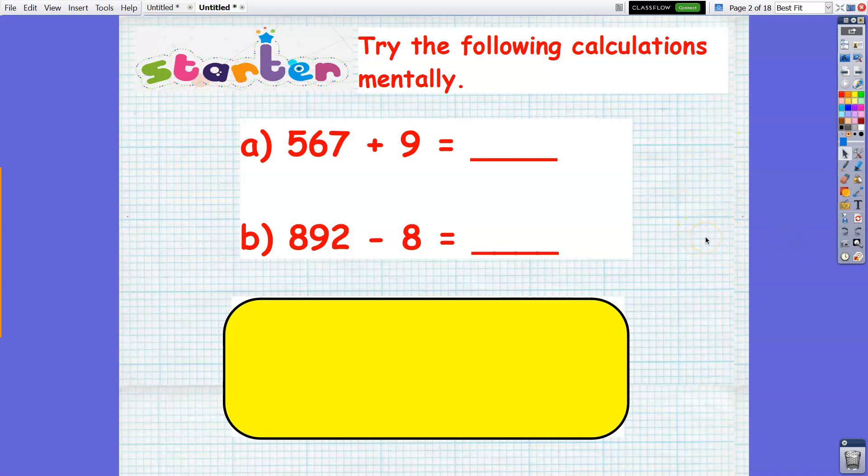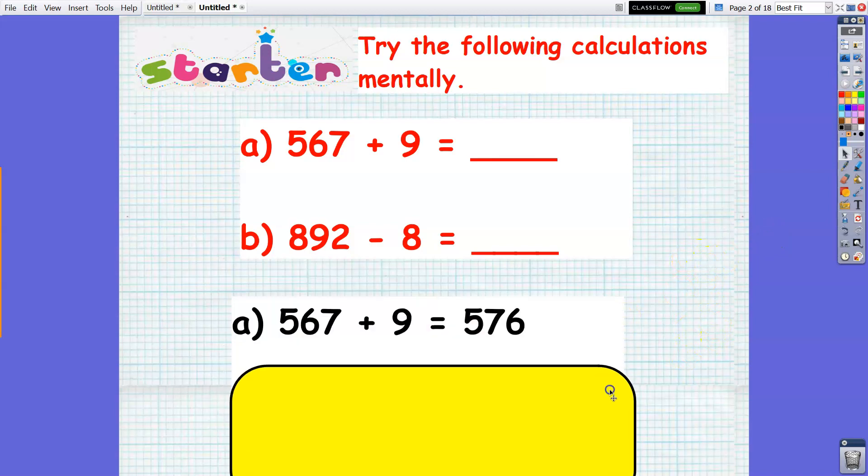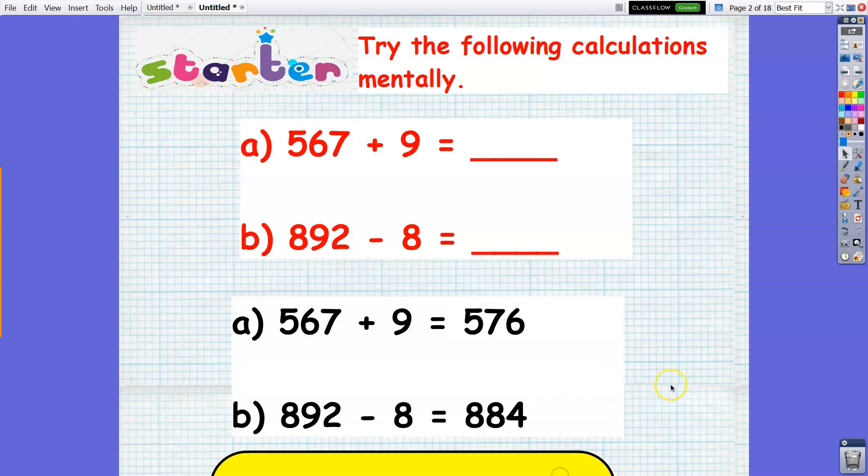Pause the video and write your answers. Time is up. 567 plus 9 is equal to 576, and 892 minus 8 is equal to 884. Did you get all the correct answers?